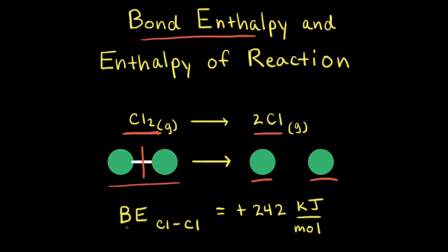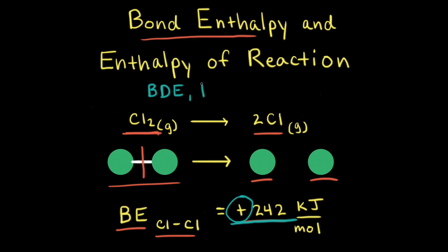Bond enthalpy can be symbolized by the letters BE. The bond enthalpy of the chlorine-chlorine single bond is equal to positive 242 kilojoules per mole, meaning it takes positive 242 kilojoules of energy to break one mole of chlorine-chlorine bonds. Bond enthalpies are always positive because it takes energy to break bonds. Another name for bond enthalpy is bond dissociation energy, symbolized as BDE or simply the letter D.